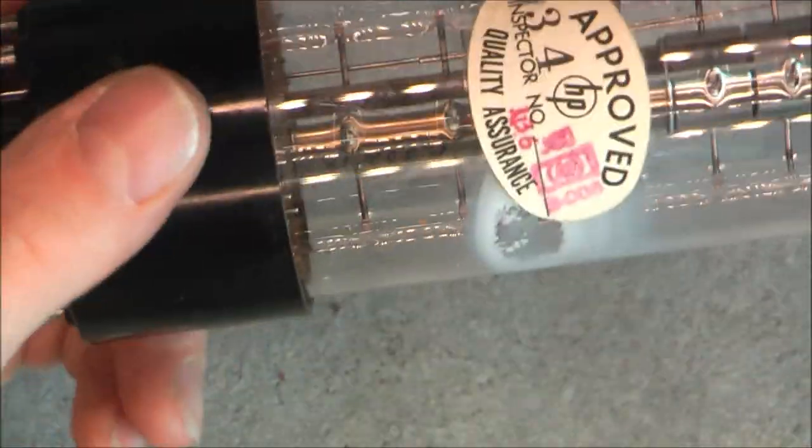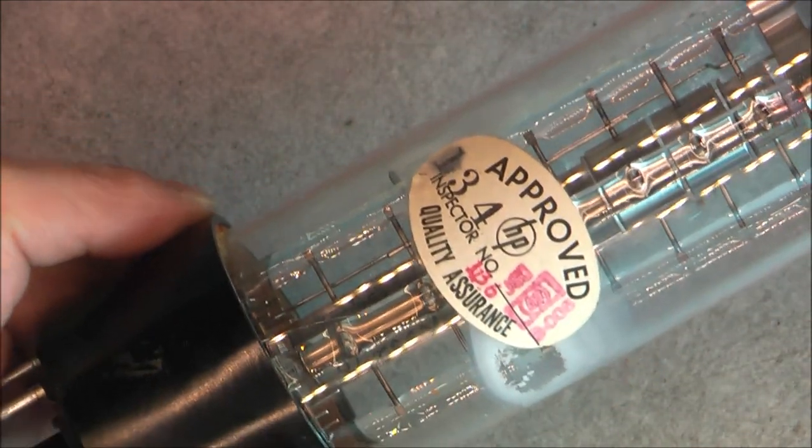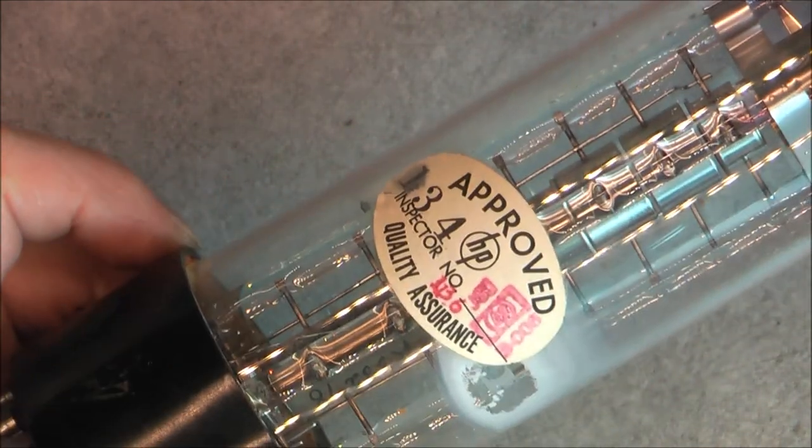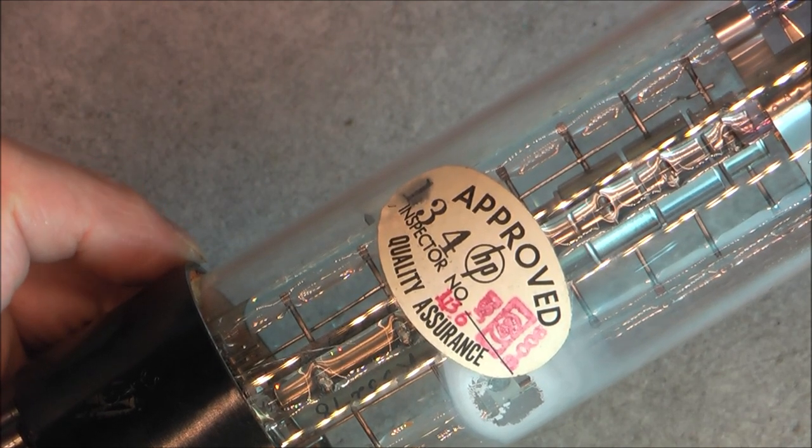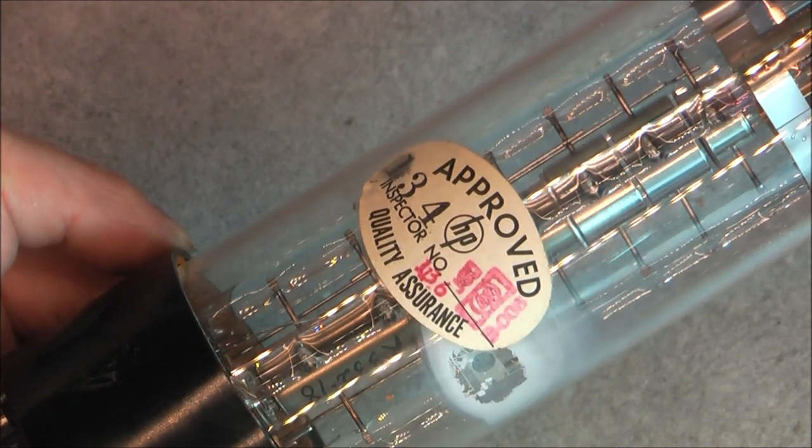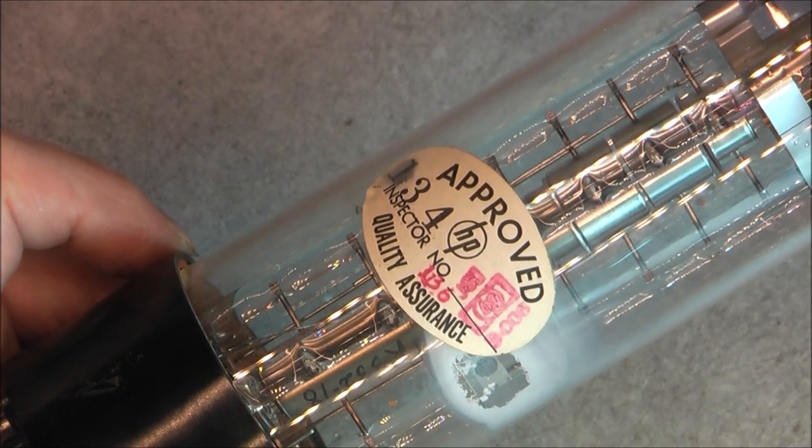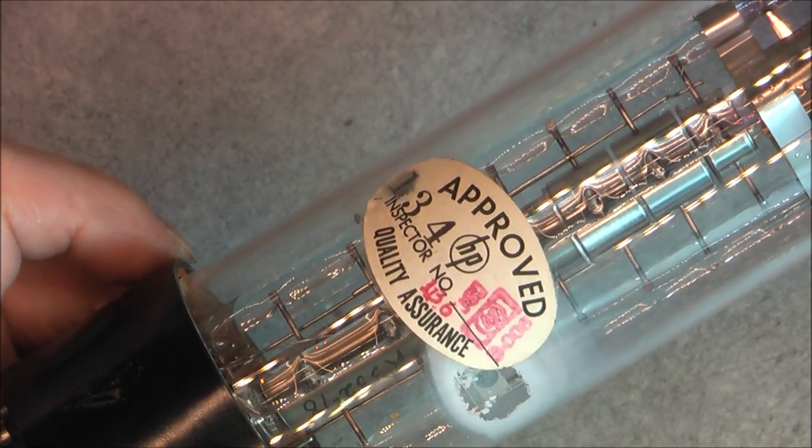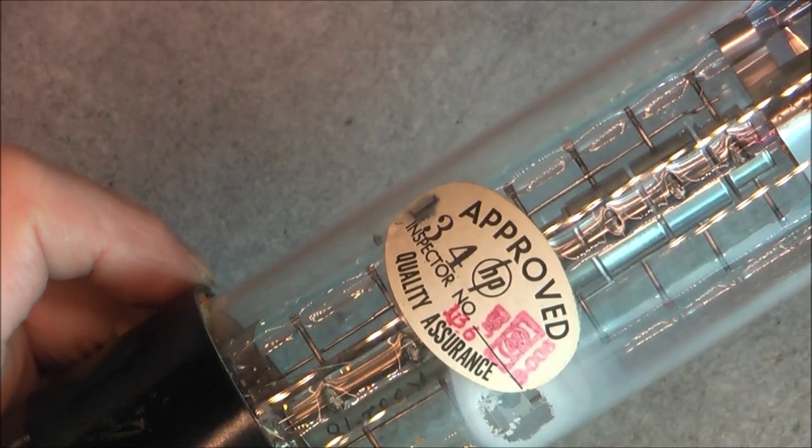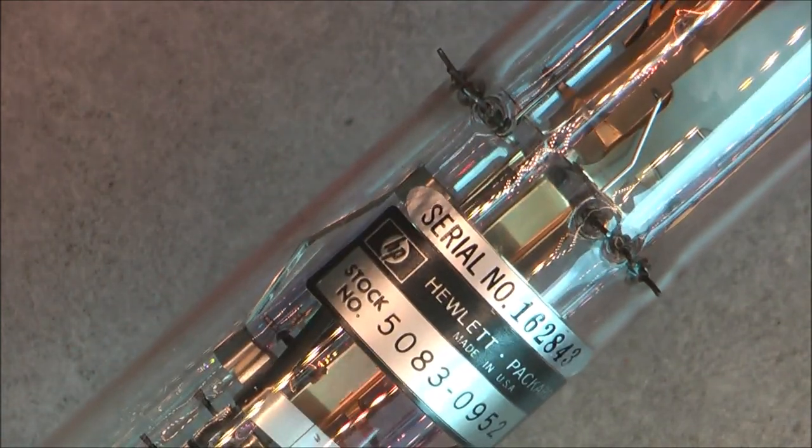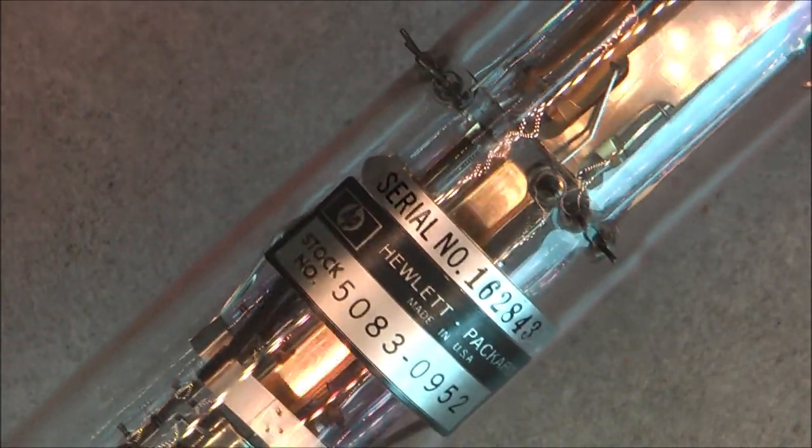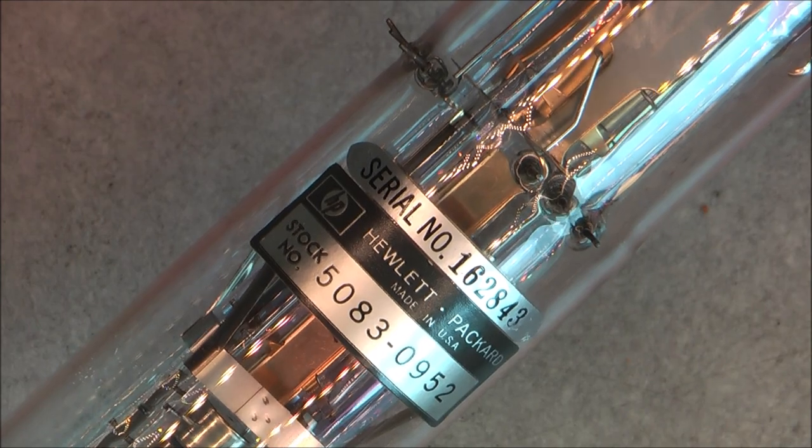We have some interesting information here. Sorry I cannot put it in the vertical direction because it is too long for my bench. We have an approved stamp from Hewlett-Packard with an inspector number and a lot of stamps actually, the quality assurance not insurance. Apparently back in the time the quality was okay. And we have here the model number tag with its own serial number, quite a huge one.